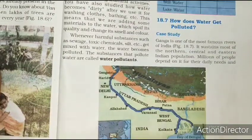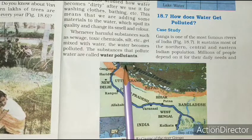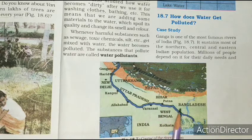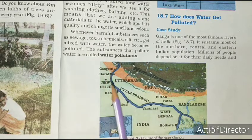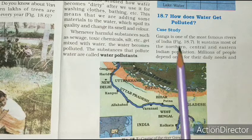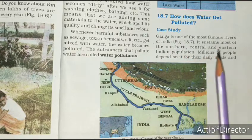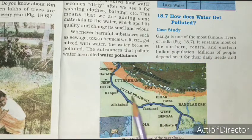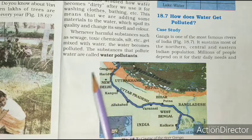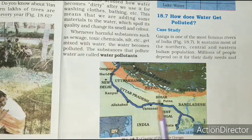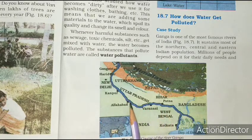You can also see this figure in the book - the river flows from Gangotri through Haridwar, New Delhi, UP, Patna, Bihar, West Bengal to Bangladesh. Ganga is one of the most famous rivers of India. It sustains most of the Northern, Central and Eastern Indian population. Millions of people depend on it for their daily needs and livelihoods.